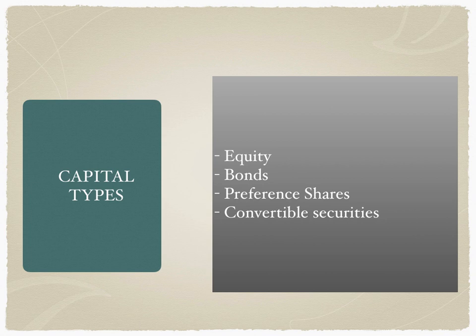Hedge fund managers hold assets in different types. Looking at a company like General Motors, their capital comprises all four types, and there could be a hedge fund owning stock in General Motors where each type could be affected by an announcement made by the corporate. To recap: the four capital types are equity (including common stock, ADR, GDR, etc.), bonds of different maturities, preference shares, and convertible securities.